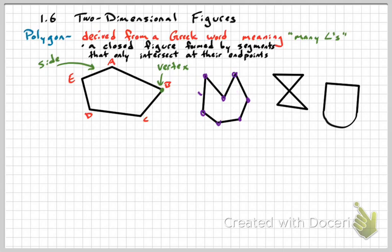That seven-sided figure also has seven sides. The third example is not a polygon because its segments crisscross — they intersect at interior points, not just endpoints. The triangles individually are polygons, but that combined figure is not. The fourth figure is also not a polygon because it has a rounded side.